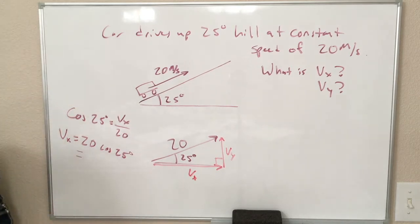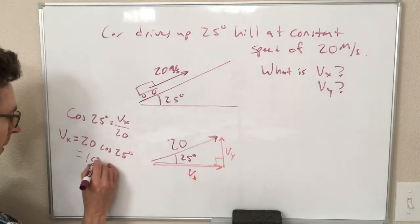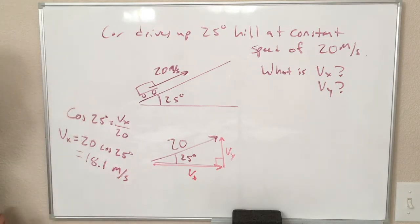I get Vx equals 20 times the cosine of 25 degrees, which is equal to 18.1 meters per second. So that is our x velocity.